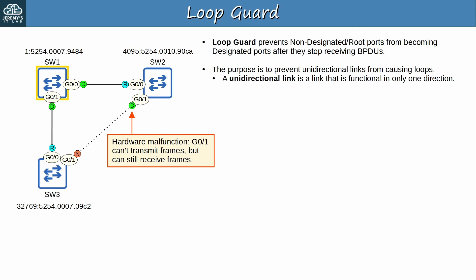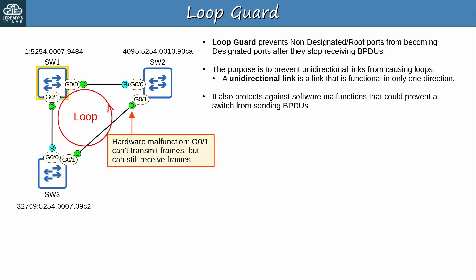A hardware malfunction occurs on SW2 G0/1, so it can't transmit frames but can still receive frames. SW3 stops receiving BPDUs from SW2, so after the max age timer expires, G0/1 will become a designated port and eventually move to the forwarding state — creating a layer 2 loop between SW1, SW2, and SW3. LoopGuard would prevent this by putting G0/1 in the loop inconsistent state instead. Note that LoopGuard also protects against software malfunctions that could prevent a switch from sending BPDUs.